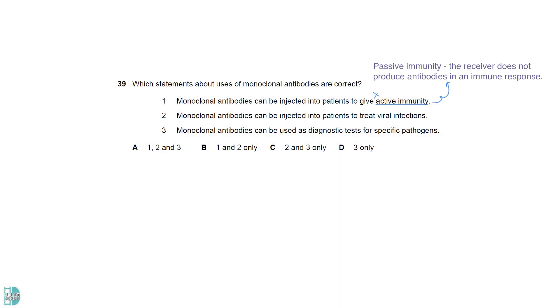Monoclonal antibody injection is passive immunity as the receiver does not produce antibodies in an immune response. It can be used to treat diseases as they can bind to specific antigens. The binding of monoclonal antibodies to a specific antigen allows us to detect the presence of a specific pathogen in a sample.